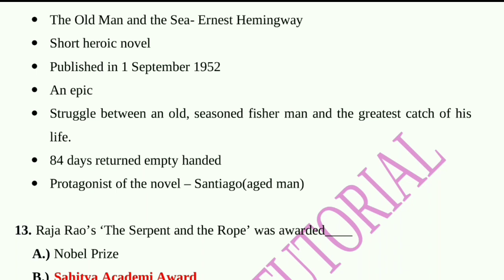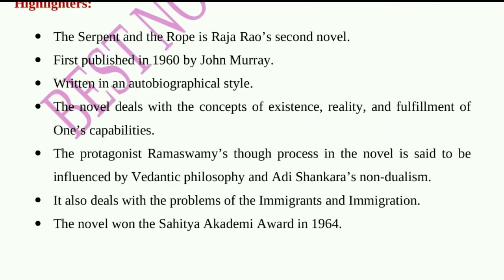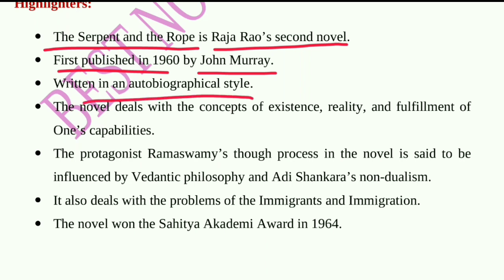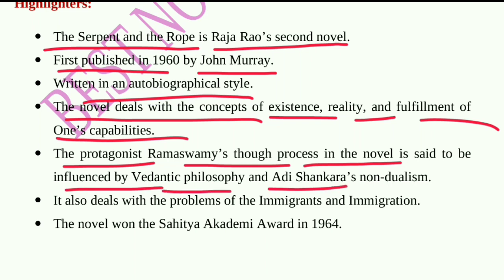Question number thirteen: Raja Rao's 'The Serpent and the Rope' was awarded — A) Nobel Prize, B) Sahitya Akademi Award, C) Booker Prize, D) None of these. The Serpent and the Rope is Raja Rao's second novel, first published in 1960 by John Murray, written in an autobiographical style. It deals with existence, reality, and fulfillment, and the protagonist Ramaswamy's thought process is influenced by Vedantic philosophy and Adi Sankara's non-dualism. The novel won the Sahitya Akademi Award in 1964.